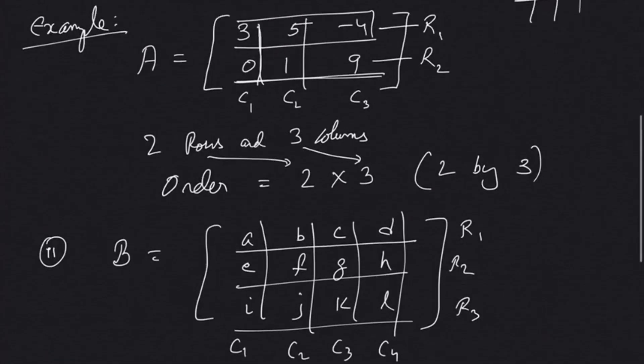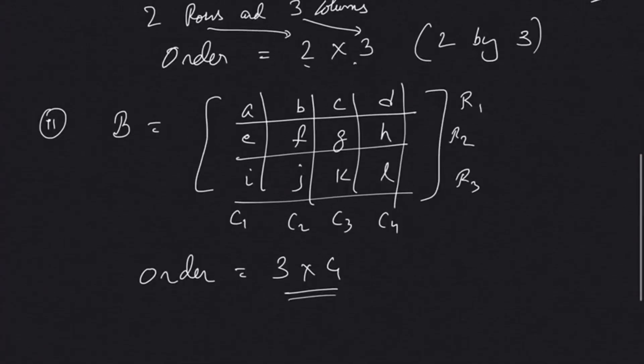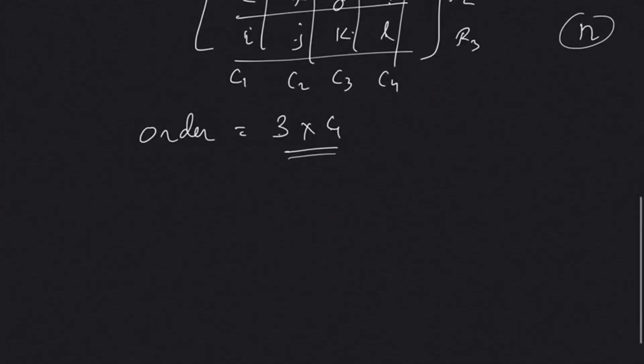One interesting thing about matrices: depending on the number of rows and columns, it will have that exact number of elements. Like 2 by 3 will have 6 elements: 1, 2, 3, 4, 5, 6. In the next problem, 3 by 4 should have 12 elements: 1, 2, 3, 4, 5, 6, 7, 8, 9, 10, 11, 12. This is how we name a matrix.